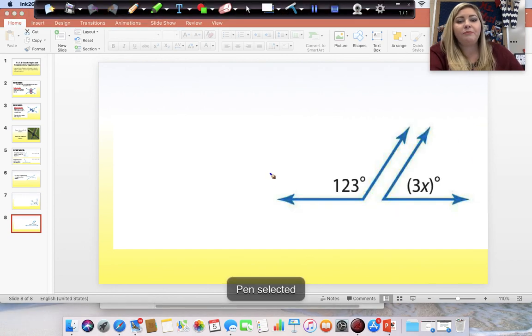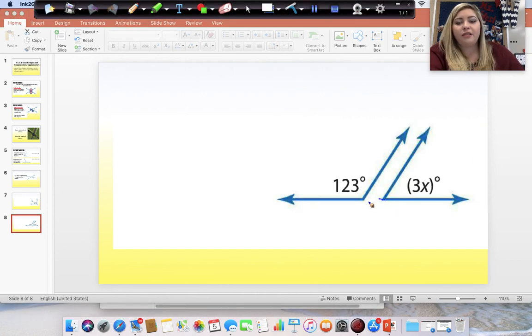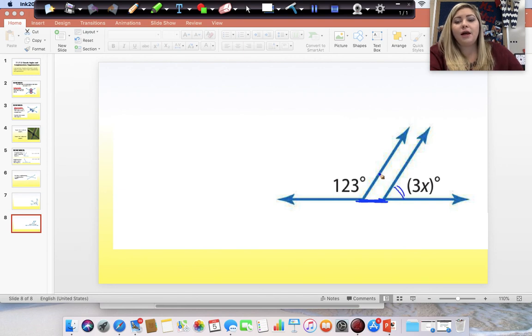Okay, and this one, these form a straight line. Okay, so, if we put this line right up next to this line, it would match up. Right? So, 3x plus 123 equals 180 because a straight line is 180.